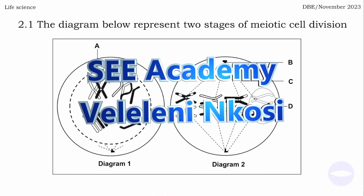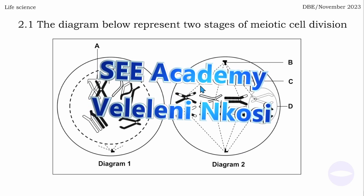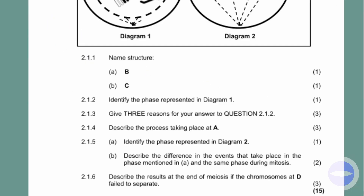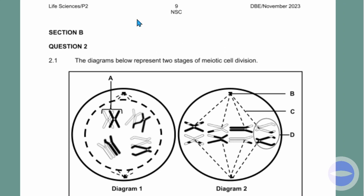Hello everyone. Welcome to C Academy YouTube channel. My name is Velen Ngozi. In today's lesson, we solve a previous question paper of Life Science which was written in November 2023. It's for Life Science Grade 12. The question paper is based on meiosis, from the Department of Basic Education. Meiosis falls under paper 2, section B, question 2.